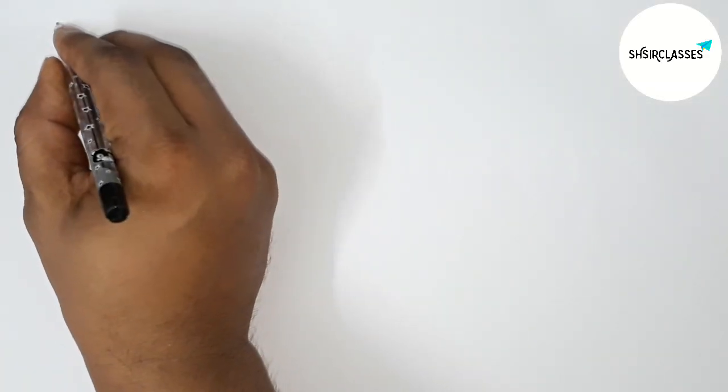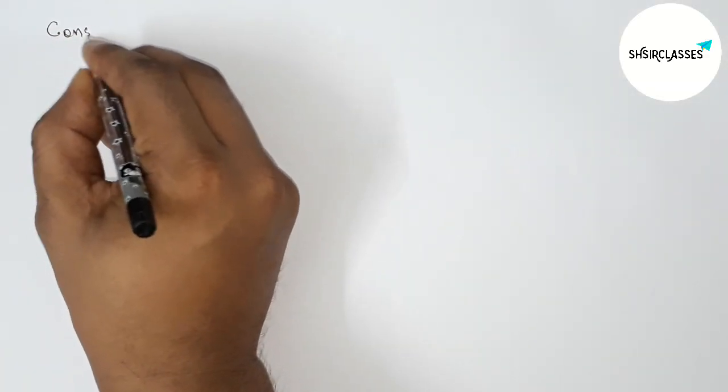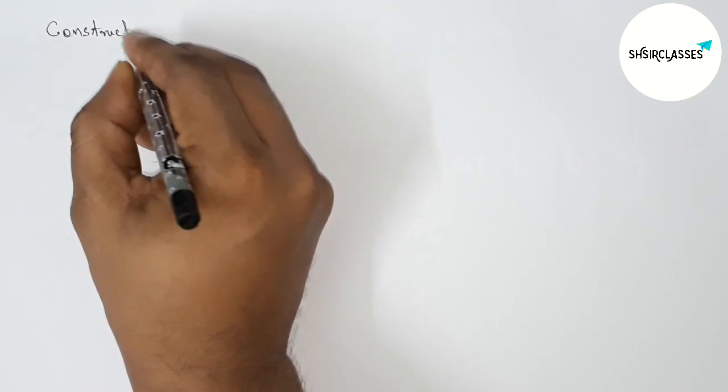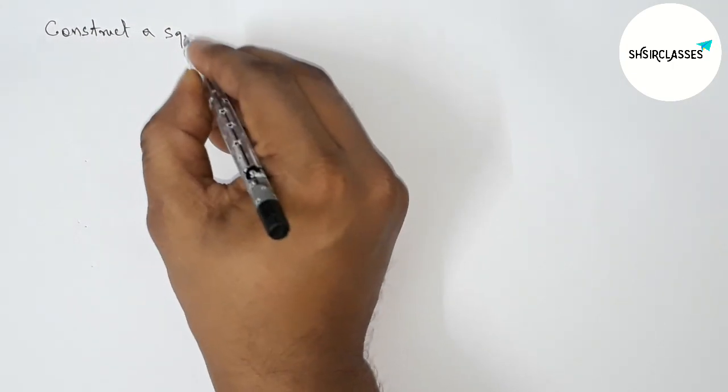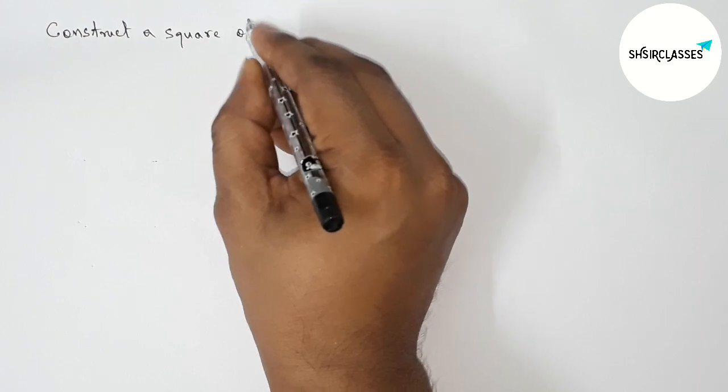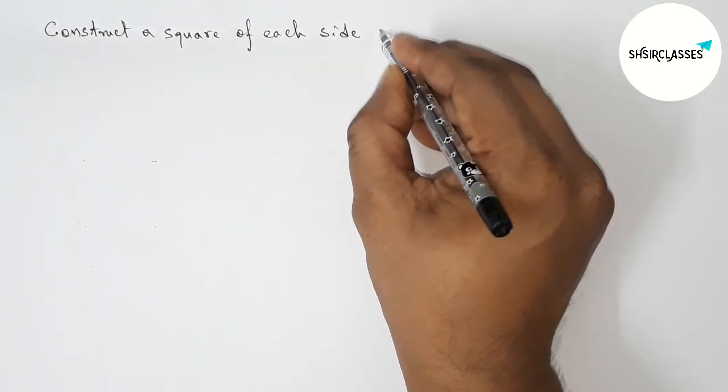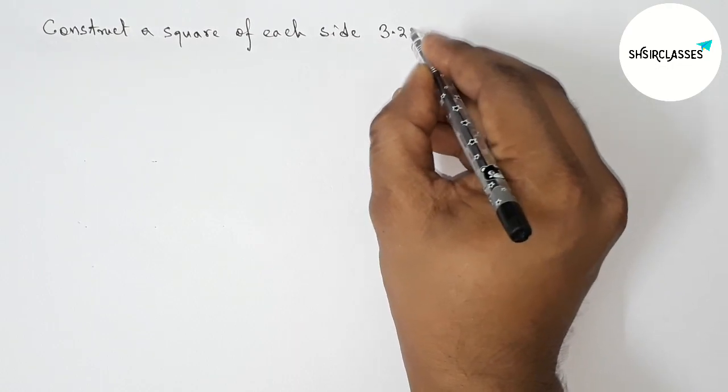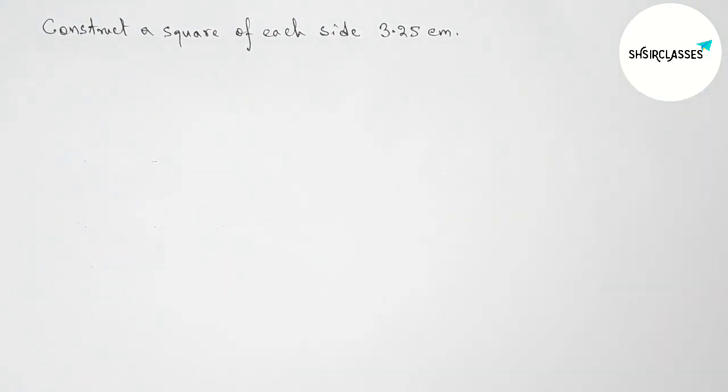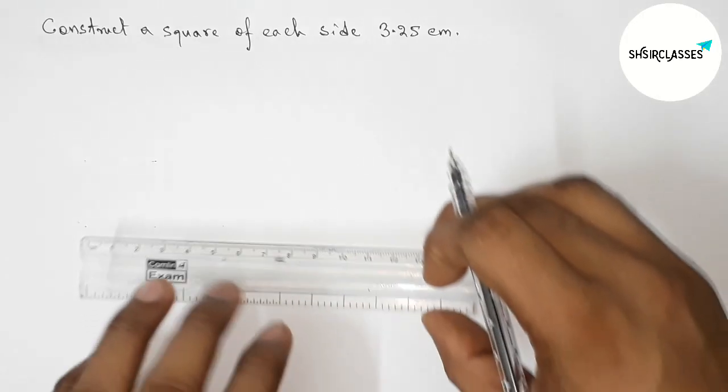Hi everyone, welcome to SI Share Classes. Today in this video we have to construct a square of each side 3.25 centimeters in an easy way, so please watch the video till the end. So let's start the video.